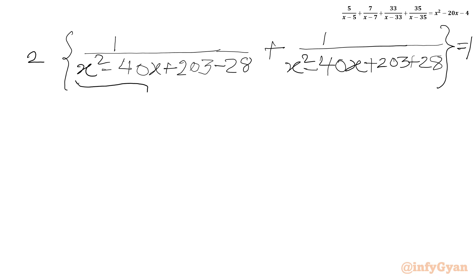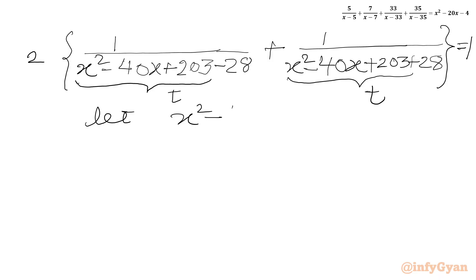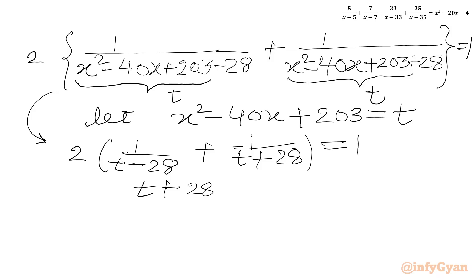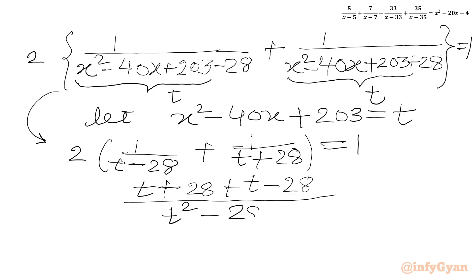Now we can substitute t equal to x squared minus 40x plus 203. So our equation in t becomes: 2 times [1 over (t minus 28) plus 1 over (t plus 28)] equals 1. We have to take LCM one more time: we write (t plus 28 plus t minus 28) over (t minus 28)(t plus 28). Applying the difference of two squares formula, the denominator becomes t squared minus 28 squared, and the multiplier is 2. RHS is 1.